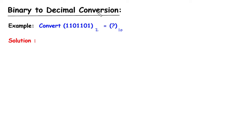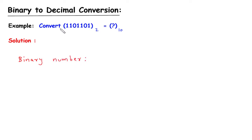Binary to decimal conversion. Example: convert this binary number into its equivalent decimal number. Solution: first we will write the binary number, that is 1 1 0 1 1 0 1. Now we will write its weight.